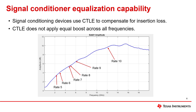This graph shows an example CTLE boost curve. We can see that CPRI rate 10 will receive more boost than CPRI rate 5. Because of this, it's important to consider the target data rate and the associated insertion loss with that data rate when selecting a signal conditioner.